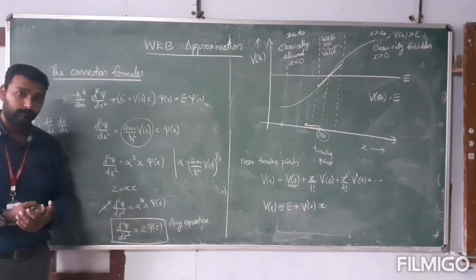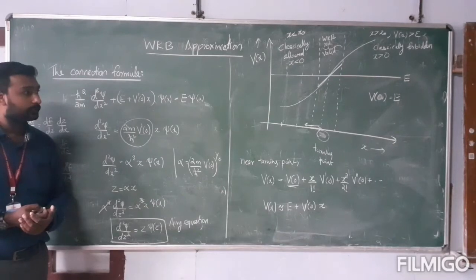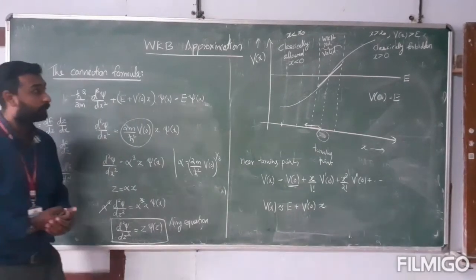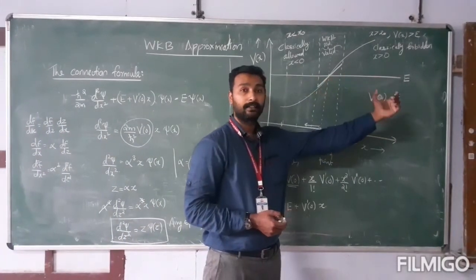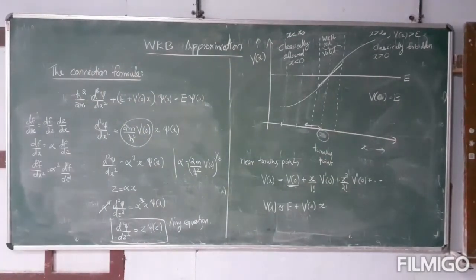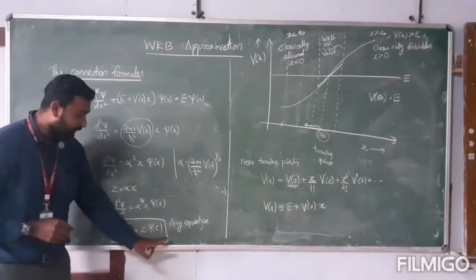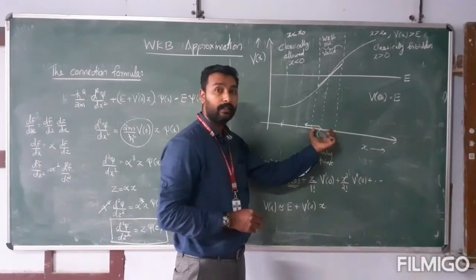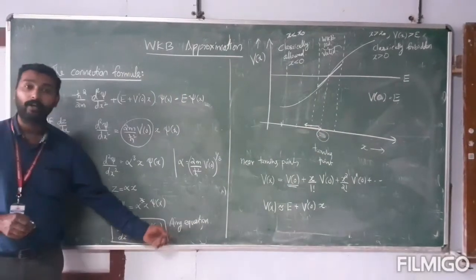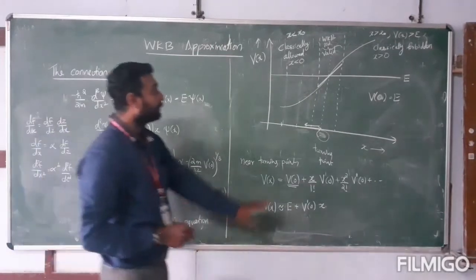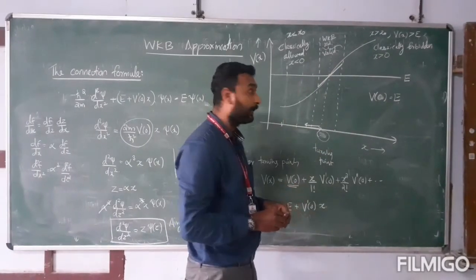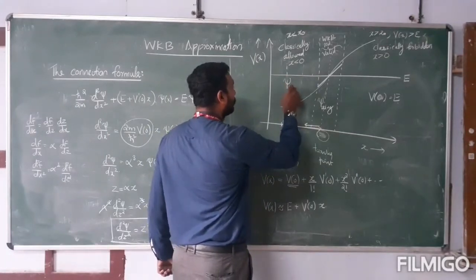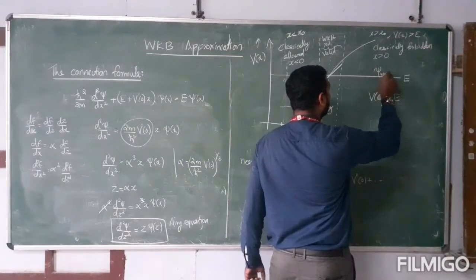At the vicinity of the turning point, the Schrödinger equation takes the form of the Airy equation. Near the turning point — the region in which WKB is not valid — the wave function takes the form of Airy functions. In the classically allowed region we have the WKB approximation, and on the forbidden side we also have WKB. Now we have to connect these wave functions.